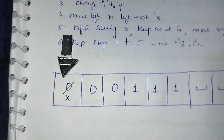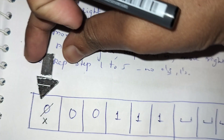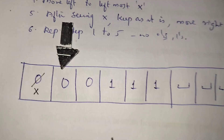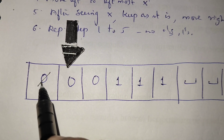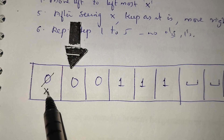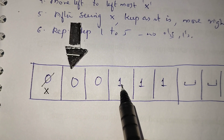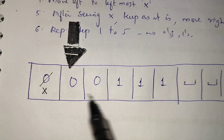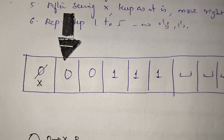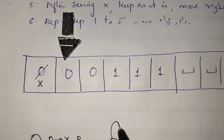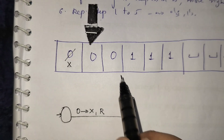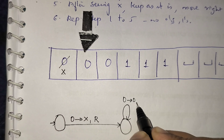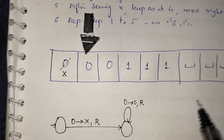It is moving one step. Now the pointer is pointing to the next 0. After replacing the first 0 with x, I need to find a matching 1 — I need to travel till I see the first 1. In between, whatever I am seeing I need to keep as it is. Whenever I see a 0, don't do anything — keep as it is and just keep moving towards right.